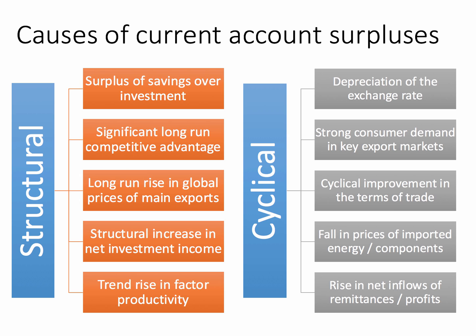What about cyclical causes of a surplus? These are more short-term factors. We would include the possible beneficial effects of a depreciation in the exchange rate, which could make your export sector more competitive overseas. It could also be that you're benefiting from a boom in consumer demand in your key export markets, or that there's been a cyclical improvement in the terms of trade. For example, you might be a copper exporter and the world price of copper goes up, which automatically feeds through to your balance of payments. Alternatively, if the price of oil and gas falls dramatically and you're an importer of that commodity, you'll spend less on it, improving your balance of payments.